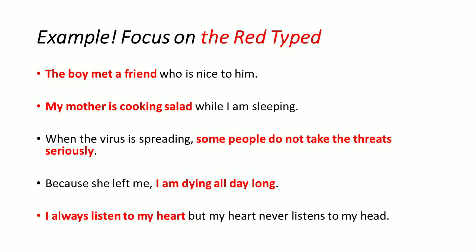Focus on the main clauses in these examples: 'The boy met a friend who is nice to him' — main clause is 'the boy met a friend'; 'My mother is cooking salad while I am sleeping' — main clause is 'my mother is cooking salad'; 'When the virus is spreading, some people do not take the threats seriously'; 'Because she left me, I'm dying all day long' — note a comma is used when a dependent clause comes first; 'I always listen to my heart but my heart never listens to my head.'